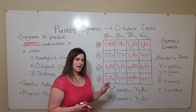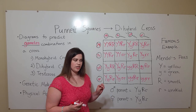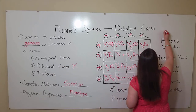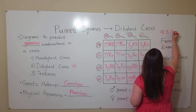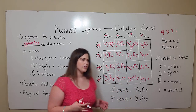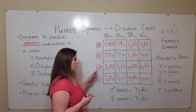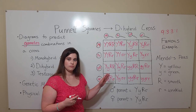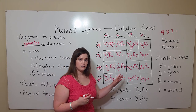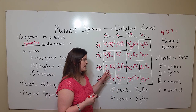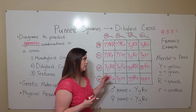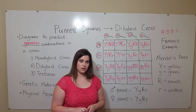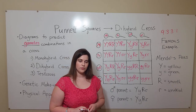One more thing to mention with the dihybrid cross is the phenotypic ratio. The phenotypic ratio for a dihybrid cross is 9 to 3 to 3 to 1. This is simply the ratio of these 16 possibilities. There are 9 squares where the genotype would give a yellow smooth plant, 3 that would give a yellow wrinkled plant, 3 that would give a green smooth plant, and 1 that has only recessive alleles giving the green wrinkled plant. That is what the 9 to 3 to 3 to 1 ratio means.